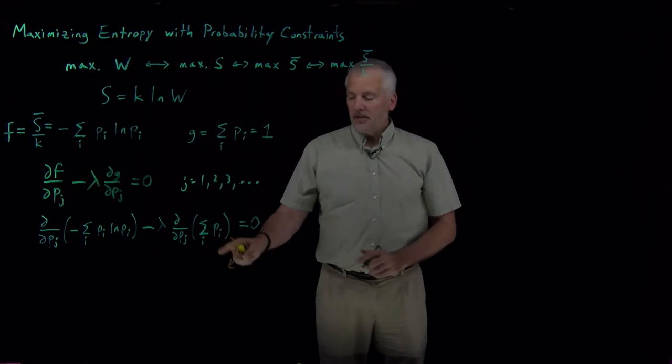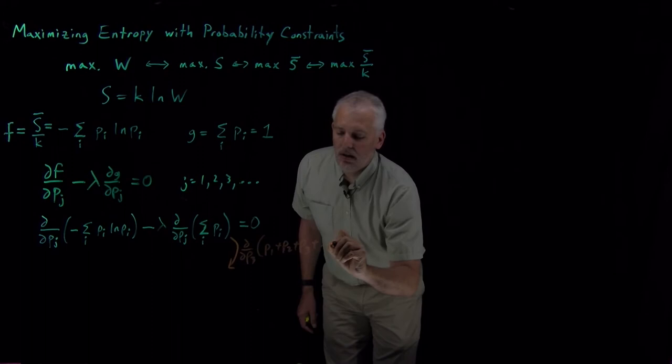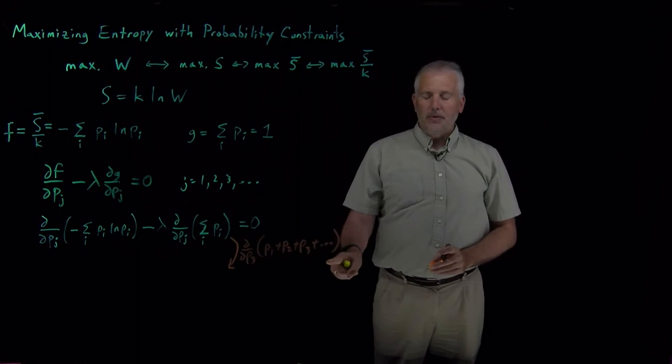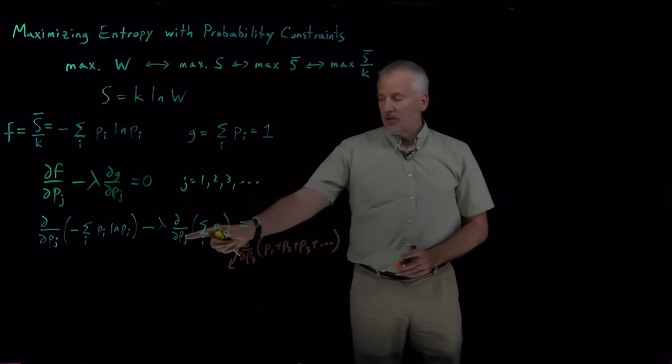That sum is just, for example, d/dP3 of P1 plus P2 plus P3 plus P4. The sum just means add up all the different probabilities, P1, P2, P3, P4, and so on. Derivative with respect to P3 of that sum, none of those terms matter except the P3 term, and so derivative of P3 with respect to P3 is just one. This derivative is actually quite simple in form.